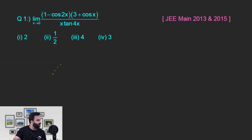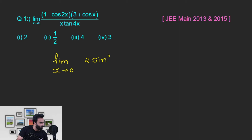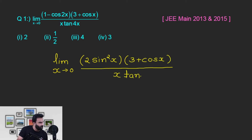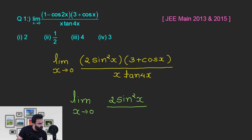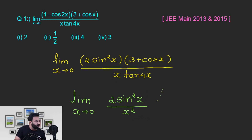1 minus cos 2x can be written as 2 sin square x. Now limit x tending to 0, sin x upon x has value 1. So what we are going to do is: 1x is already here and we have x square created.